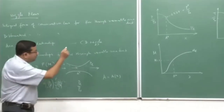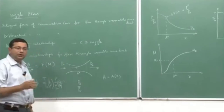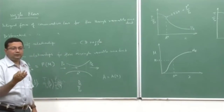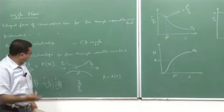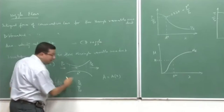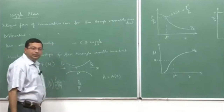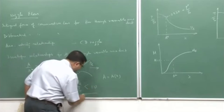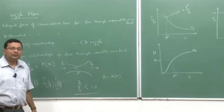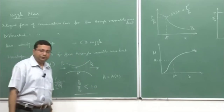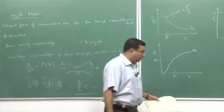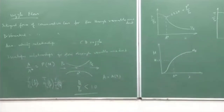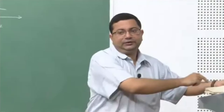In order for the flow to be established, there must be a force in the direction of flow. Therefore, p₀ must be greater than p_e. So this ratio must be less than 1 — only then will we have a flow. These are the things we discussed till the last lecture.